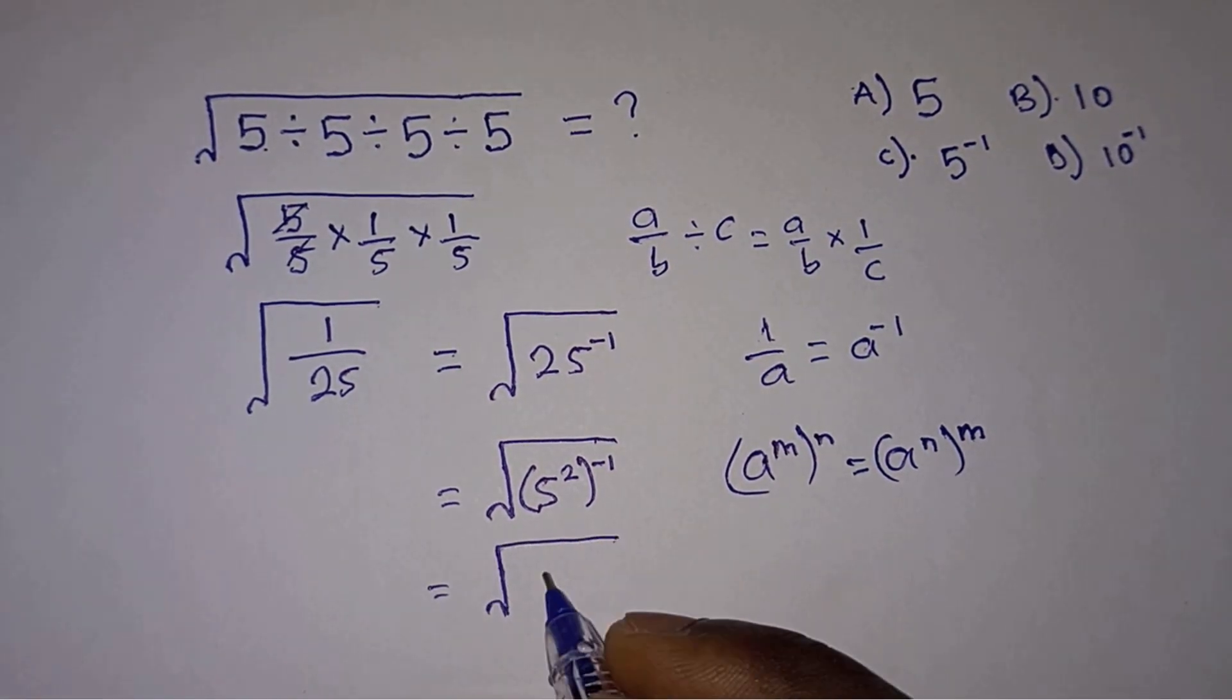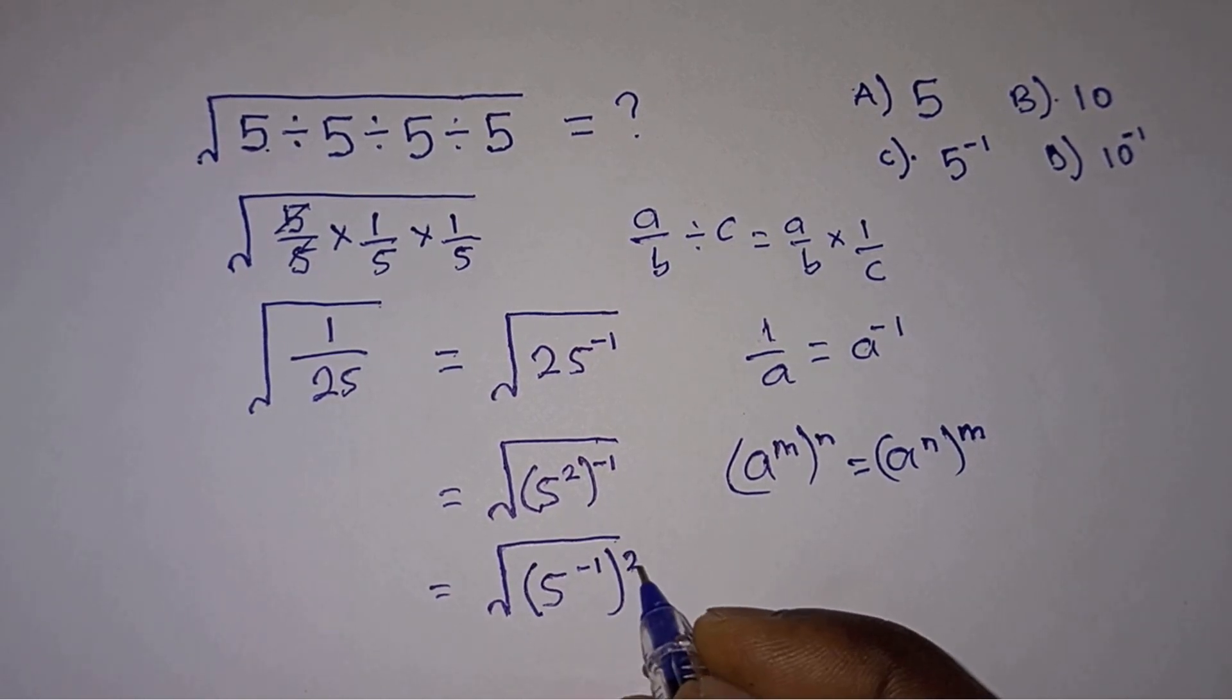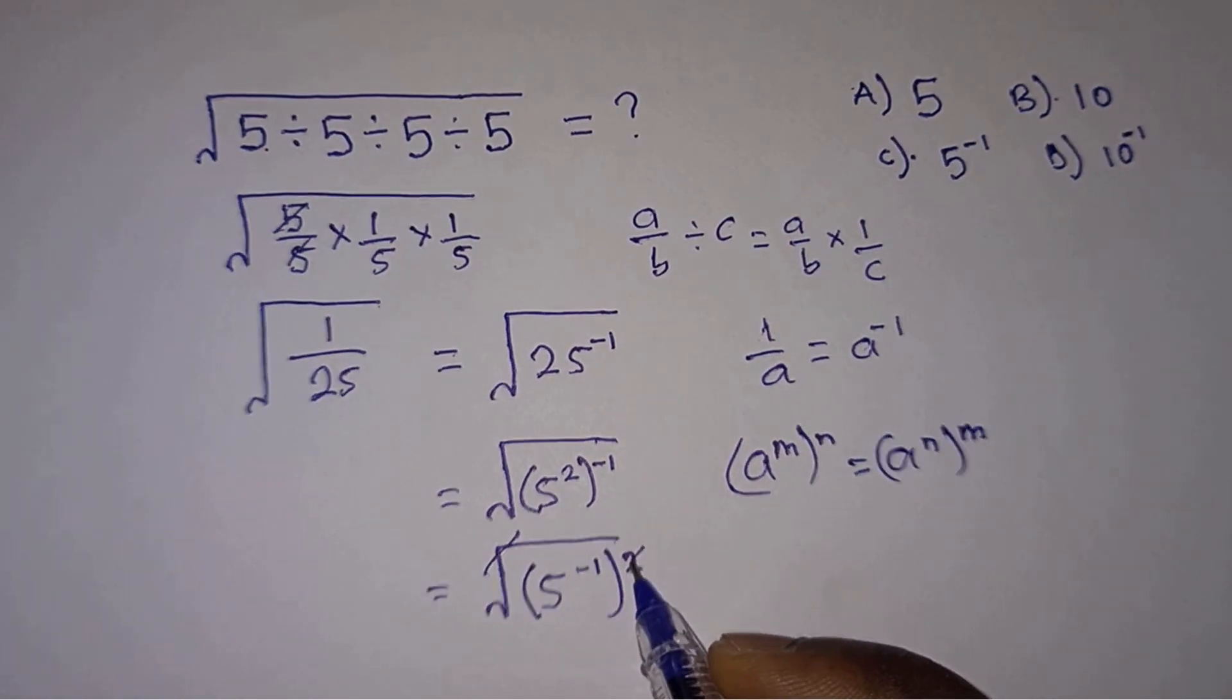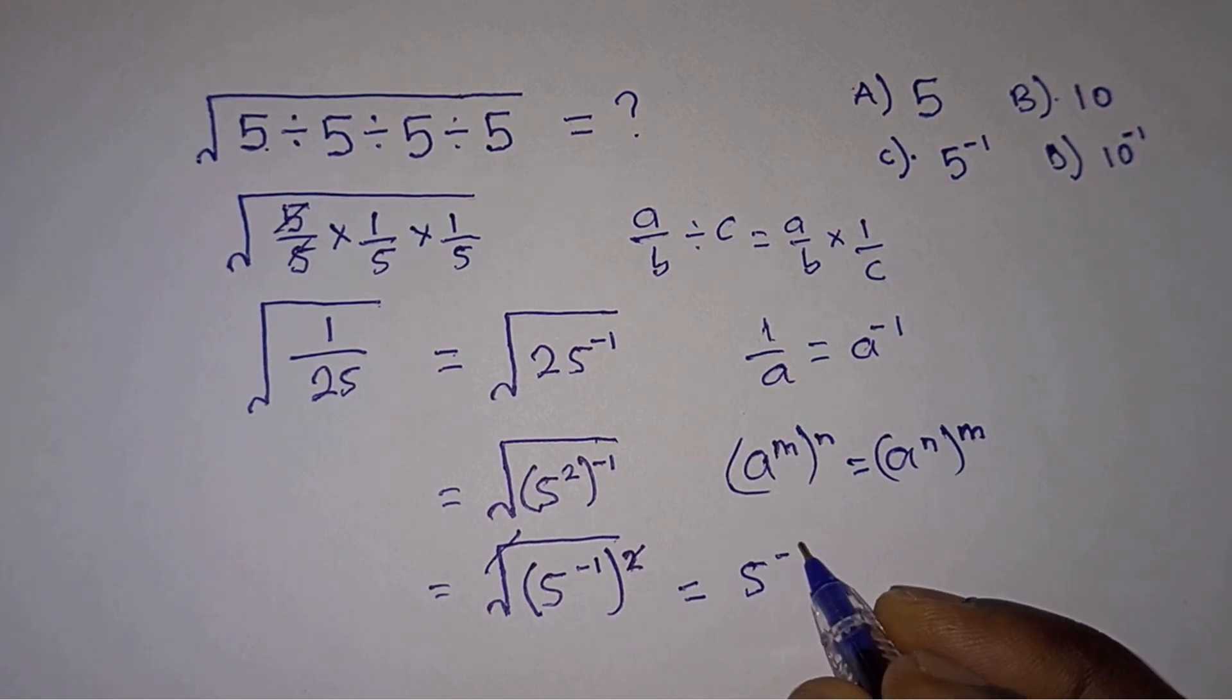So we can write this as square root of 5 to the power minus 1 all to the power 2. Straight away, we can see that the square root and the square will cancel, and we are left with 5 to the power minus 1.